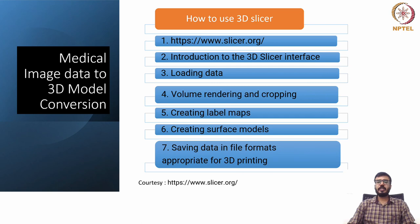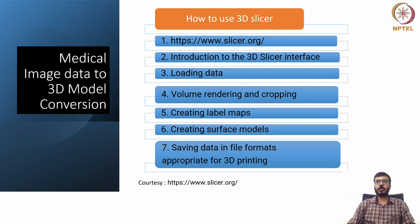First we will see the 3D Slicer interface, and then we will see how we can load the data into the 3D Slicer interface. Then we will go to the volume rendering and cropping section, and then we will see creating level maps. Later on, we will also see how we can convert this into surface models, and how these models can be converted to 3D printable formats. All these steps we will see in detail.